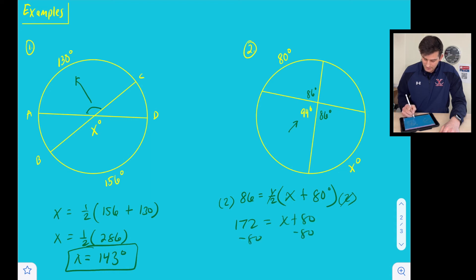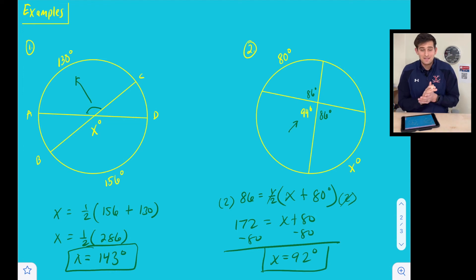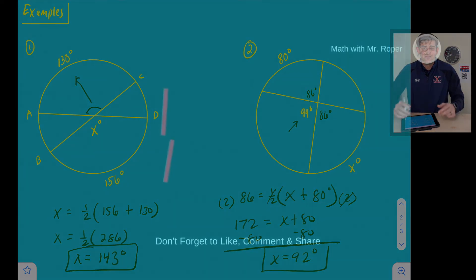So let's subtract 80 from both sides. So 172 minus 80, and we get X is equal to 92 degrees. And so that is how you use the angles inside a circle theorem.